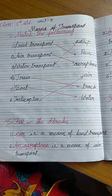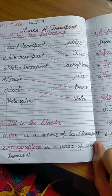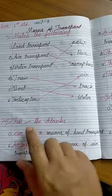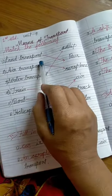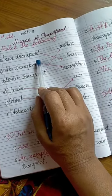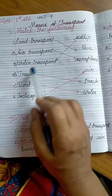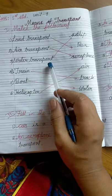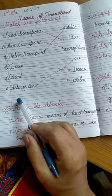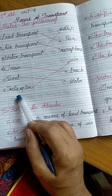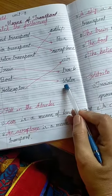The first activity is match the following. In the first row, dear students: land transport, air transport, water transport, train, boat, helicopter on one side.